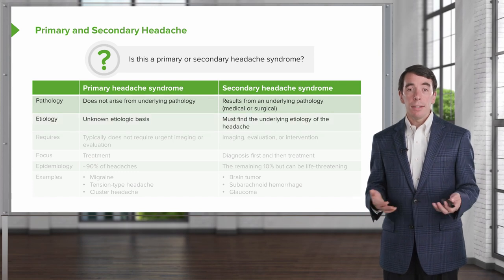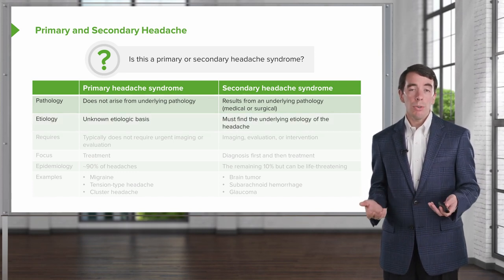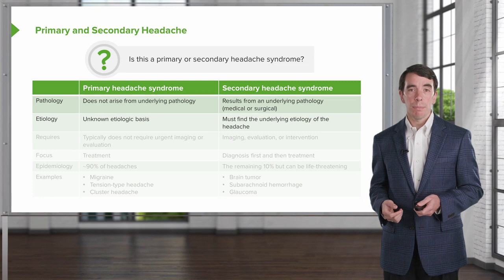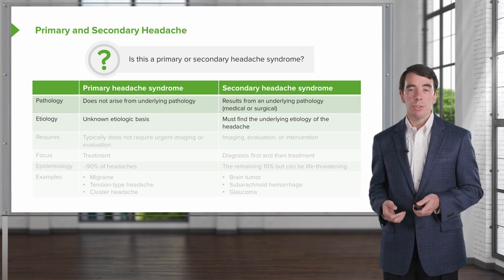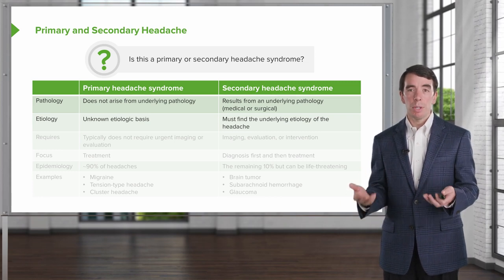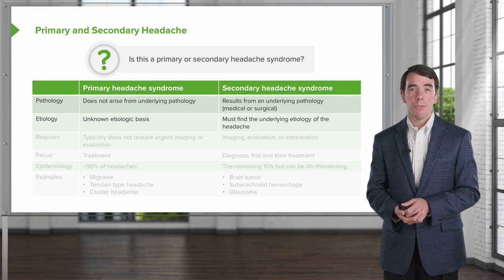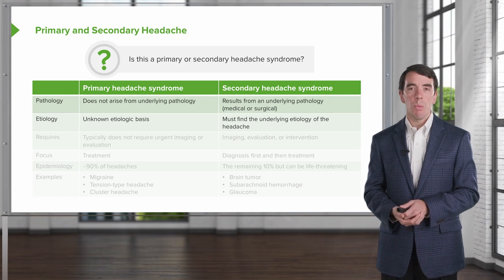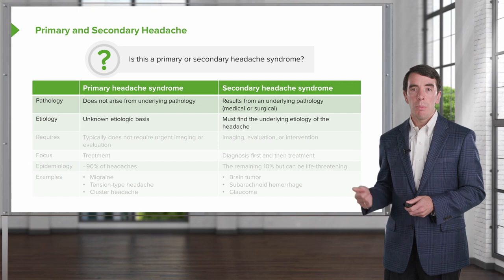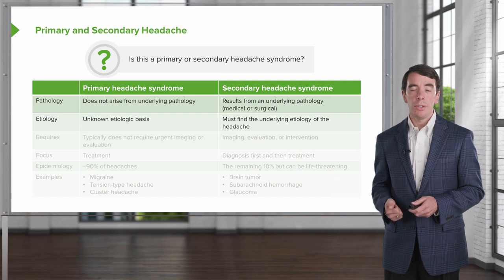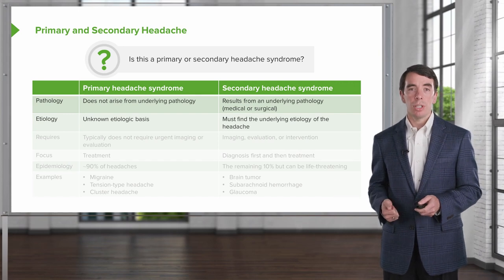What's the etiology for these? Primary headache syndromes have no known etiology — they're primary, with an unknown etiology. They're coming from something related around the brain, and we need to focus on treatment, not on what's the cause. That's different from the secondary headache syndromes, which often have an underlying etiology, and our job is to figure that out.